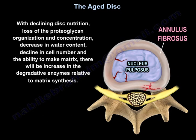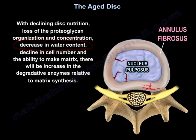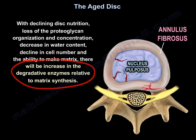By declining disc nutrition, there is loss of proteoglycan organization and concentration, decrease in water content, decline in cell number and in the ability to make matrix, and there will be an increase in degradative enzymes relative to matrix synthesis.